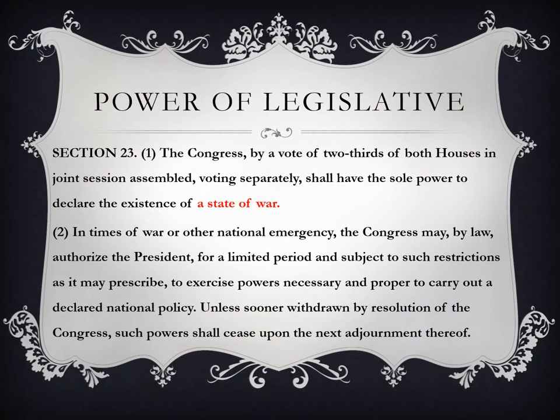By virtue of Section 23, Congress, by a vote of two-thirds of both houses in joint session assembled voting separately, shall have the sole power to declare the existence of a state of war. In times of war or national emergency, Congress by law may authorize the President for a limited period to exercise emergency powers. The power to declare a state of war is different from rebellion or invasion, which we will discuss later.